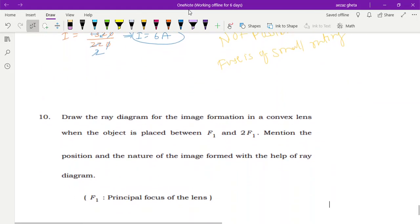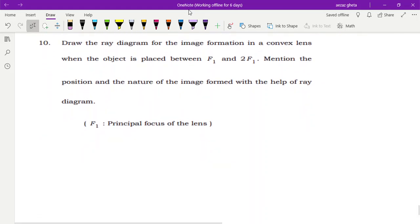Draw a diagram for the image formation in convex lens. This is your convex lens, this is your principal axis, this is your aperture diameter of lens, this is your optic center. This is your F1, here is your 2F1. Object is placed between F1 and 2F1. This is your F2, this is your 2F2.